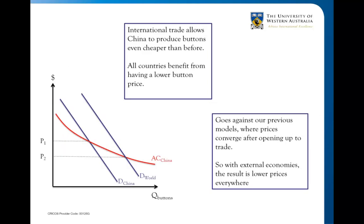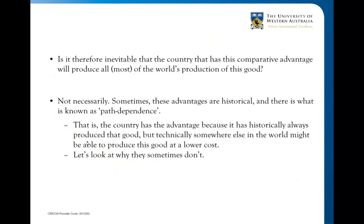We can see this on a diagram. The domestic internal demand for buttons in China is one curve, and world demand is further to the right — obviously world demand is higher than domestic Chinese demand. If China were closed, they would produce at price P1. But as the industry expands through international trade, because of these economies of scale, they're able to produce buttons at an even lower price.